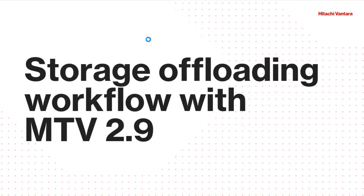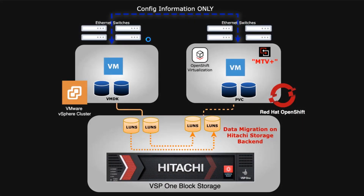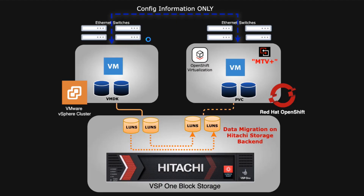With the storage offloading workflow in MTV 2.9, not a lot has changed in the plan setup — you still have the same migration plan and identify the same source VMs. But the difference is that instead of transferring the data over the network, the data now transfers inside the storage array. With the Hitachi VSP1 storage array, we can transform those VMDKs into persistent volumes recognized by VMs running on OpenShift virtualization. It handles all format conversion, leveraging CSI drivers and cloning operations inside the array. This storage offloading function is available for other vendors, with Hitachi supporting this first release in version 2.9.